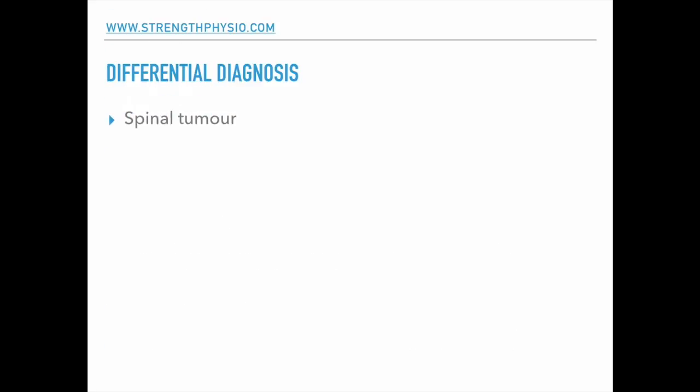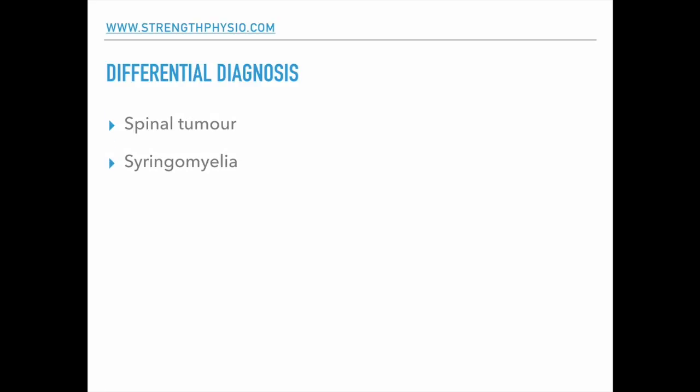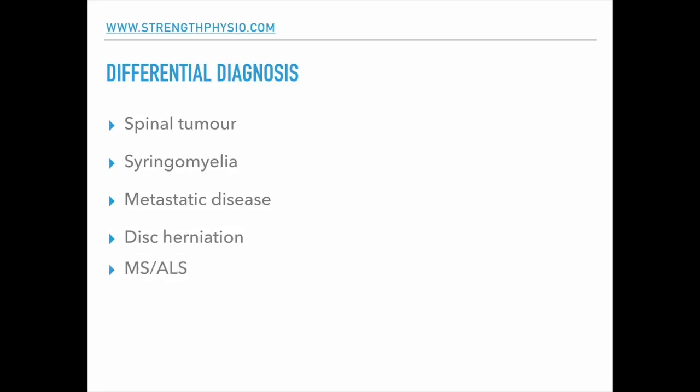Differential diagnoses include spinal tumor, syringomyelia, metastatic disease of the spine, severe disc herniation, and MS or ALS. The main ones to consider are MS, ALS, metastatic disease, and spinal tumor - basically things causing a stenotic compression on the spinal cord. If you feel there is compression on the spinal cord with many of these symptoms, these would be classed as red flags, and it would be a good idea to pursue imaging and onward referral.